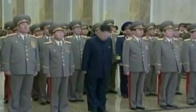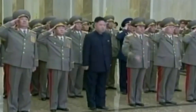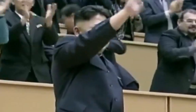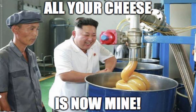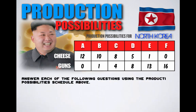Let's go to North Korea. We've already talked about how North Korea is a centrally planned economy. Kim Jong-un decides everything, and if there's one thing that Kim Jong-un likes more than guns, it's cheese — lots of cheese. The following schedule shows the production possibilities for North Korea. Given their scarce amount of resources, North Korea can produce two goods: guns and cheese.